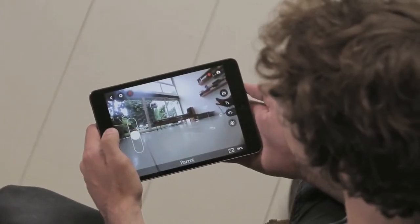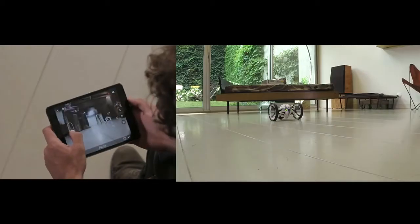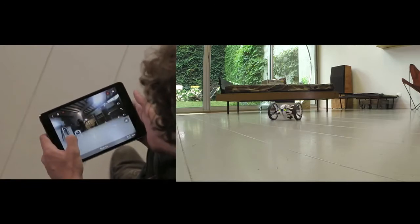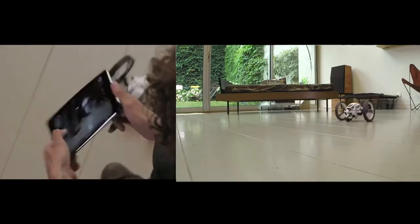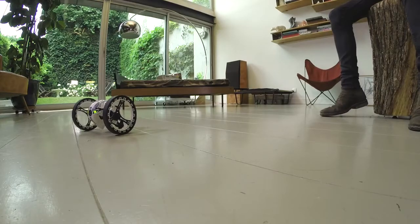To control the direction of Jumping Sumo, hold the left joystick with your thumb and tilt your smartphone or tablet to the left and to the right. Depending on the angle at which you tilt your device, you can either turn very fast or turn at very precise angles.